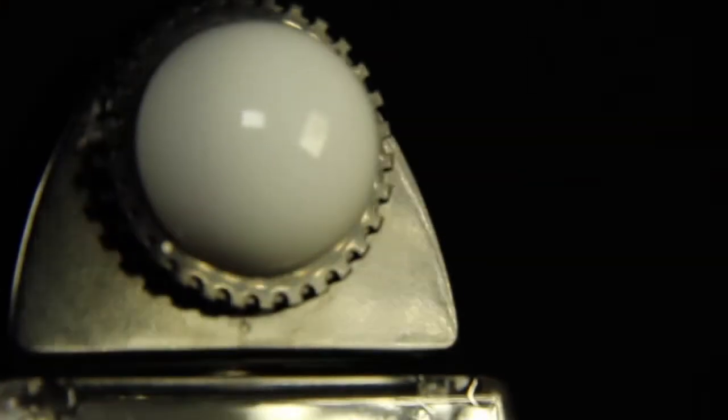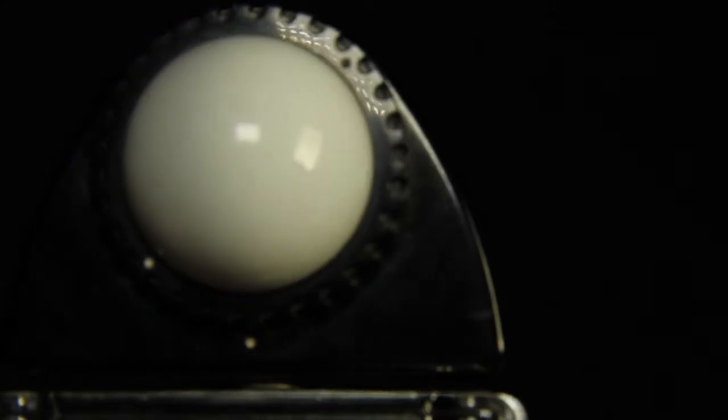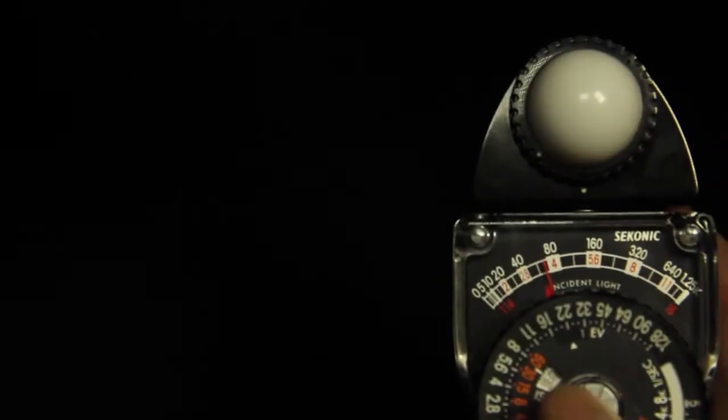The Lumisphere is the round white part of the meter and is made that way to simulate a three dimensional face. Reset the light meter by covering the Lumisphere with your hand and pressing the button.